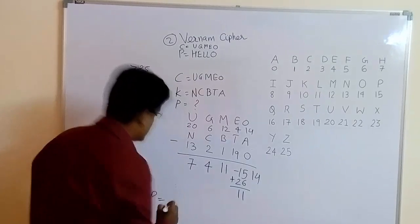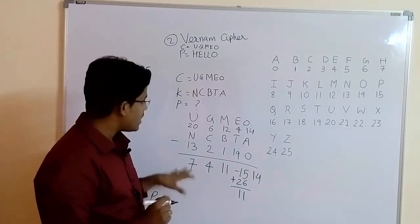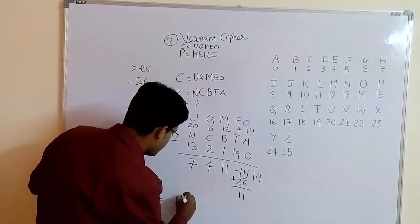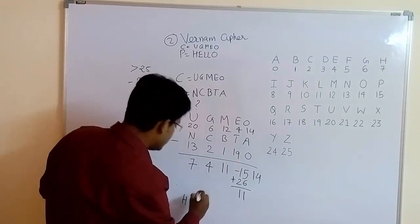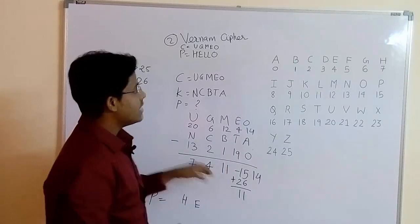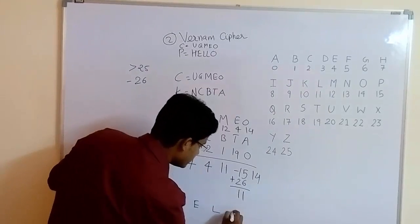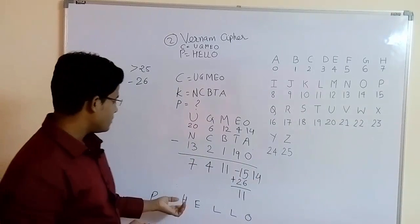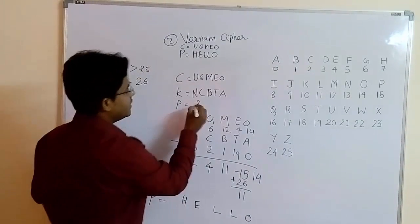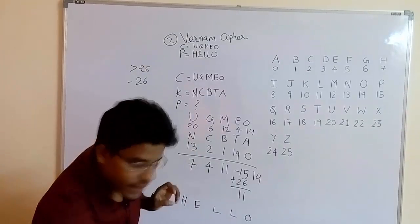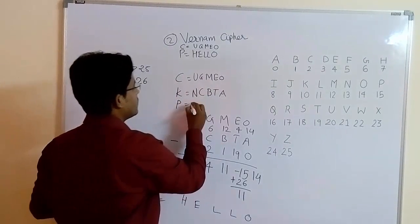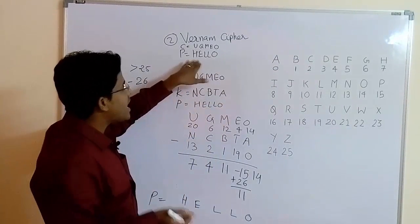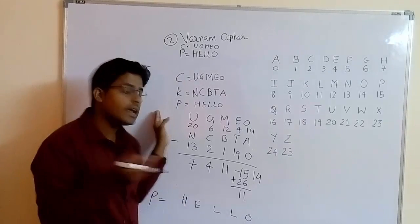Now the plaintext is the alphabet associated with these numbers: 7 is H, 4 is E, 11 is L, again 11 is L, and 14 is O. We got our plaintext back — plaintext equals H, E, L, L, O — which is 'hello'. Remember, you need to get this plaintext back; otherwise we have made some mistakes somewhere.